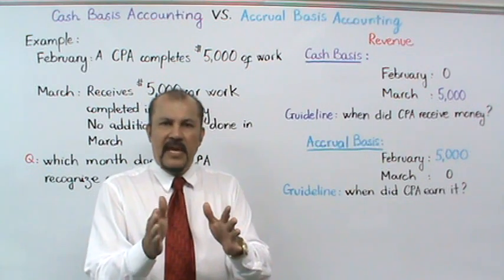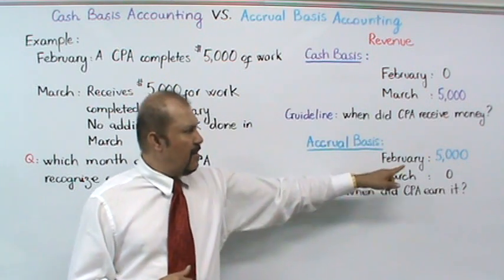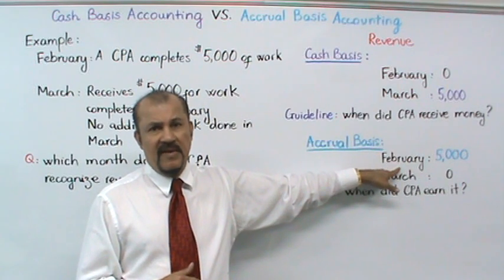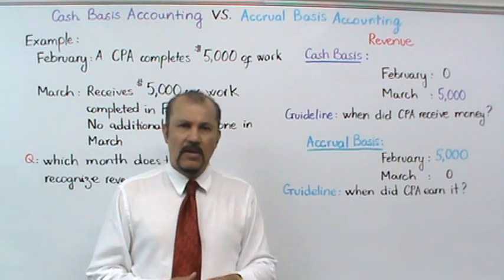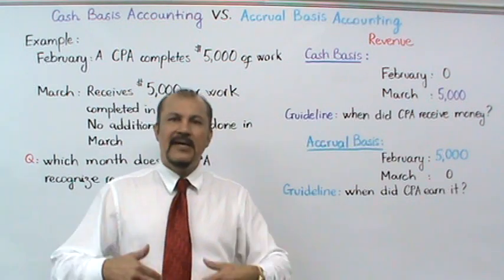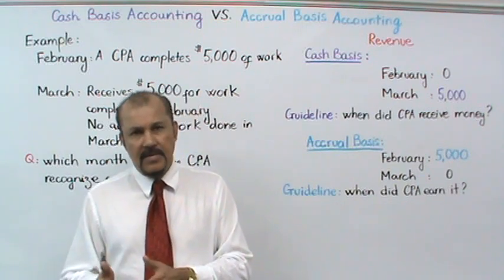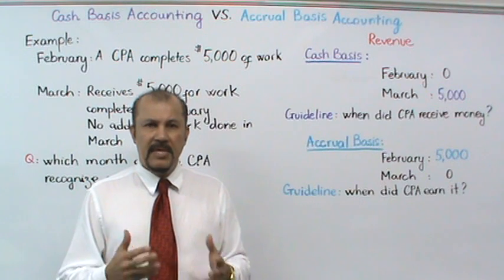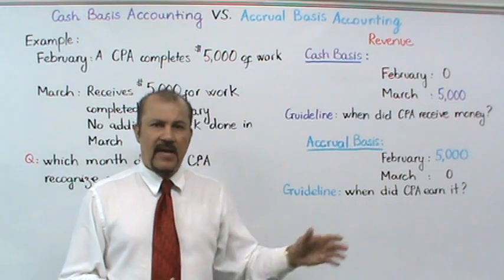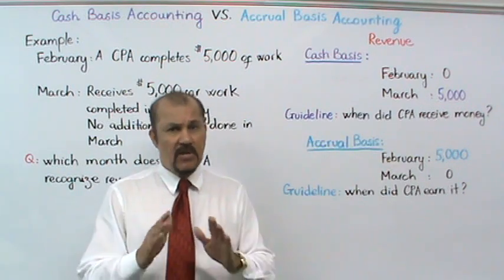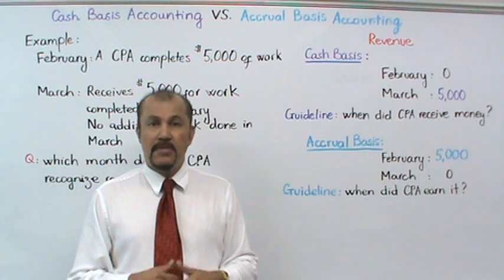Now, accrual basis. What if the CPA were to maintain his books on an accrual basis — which month would he recognize revenues? In the month of February, he would recognize $5,000 of revenues, but in the month of March his revenue recognition would be zero. Why? The guideline for accrual basis asks: when did the CPA earn this money? The CPA earned the money in the month he completed the work, which was February — so we record $5,000 in February. In March he did no work, so he did not earn any money, and therefore his revenue recognition in March is zero.